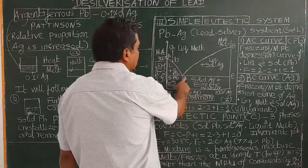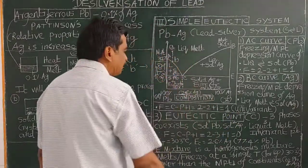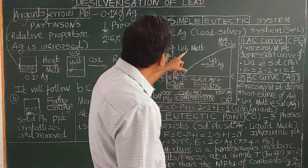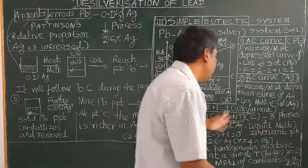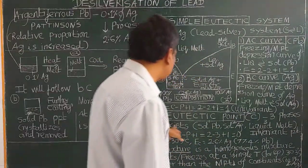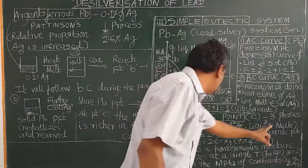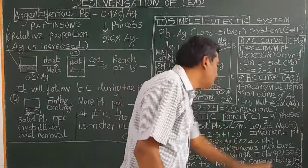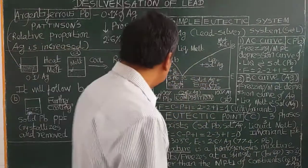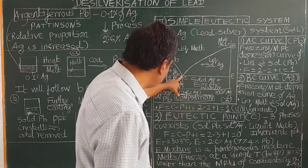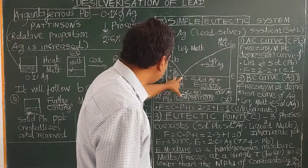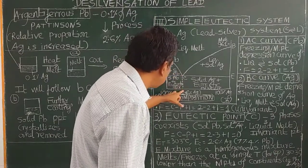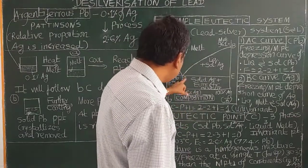Now let us see the eutectic point C. The curves AC and BC meet at point C, which is called the eutectic point, where three phases — liquid melt, solid silver, and solid lead — are in equilibrium. Applying the reduced phase rule: F = C - P + 1 = 2 - 3 + 1 = 0. Therefore the eutectic point is called the invariant point. The temperature at C is called the eutectic temperature.